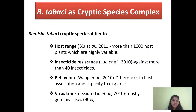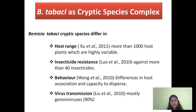We can say that Bemisia tabaci has a cryptic species complex which is very hard to differentiate. These Bemisia tabaci cryptic species differ in terms of host range — having more than 1000 host plants which are highly variable — and have insecticide resistance to more than 40 insecticides. They also differ in behavior such as host plant association and capacity to disperse. Bemisia tabaci was found to transmit almost 90% of the geminiviruses.